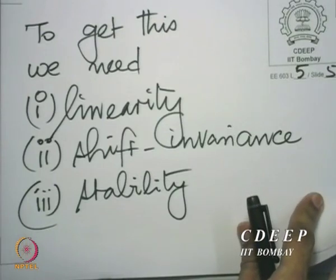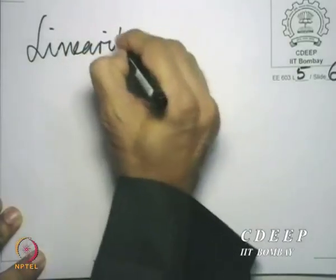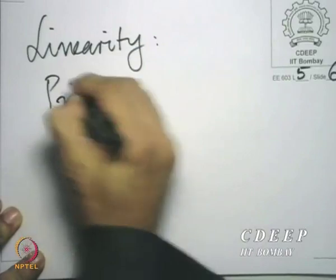Let us first take up property number 1: linearity. What does linearity mean? Linearity is an oft-quoted property in the context of systems, and in one word, linearity is summarized by what is called the principle of superposition.